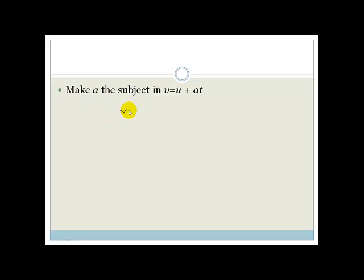We've got V = U + AT and they want A to be the subject of the formula. That means they want A by itself. First of all, what we're going to do is isolate the term that has the A in it. We need to move the U over to the V side. Since it's a plus, when we take it across the equal sign it becomes V minus U = AT.